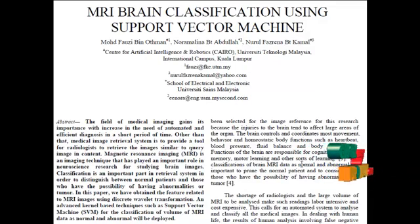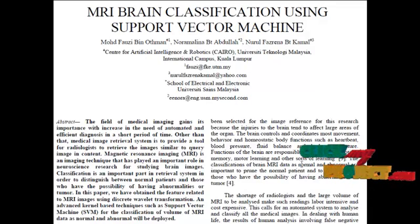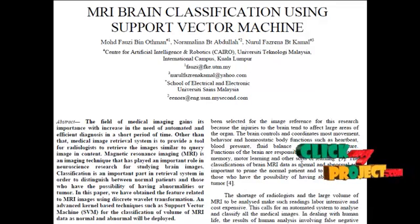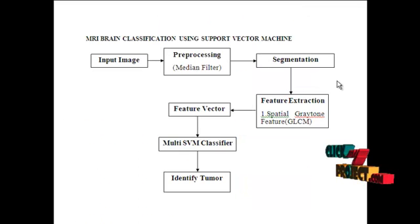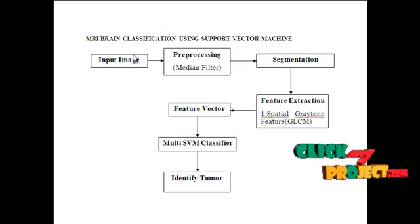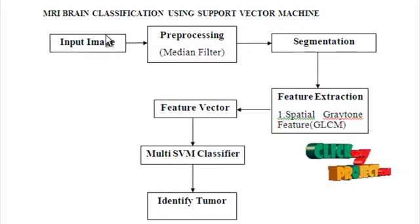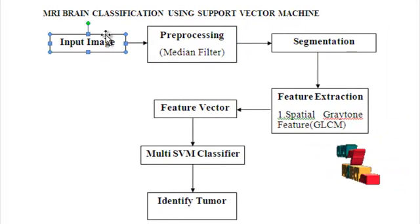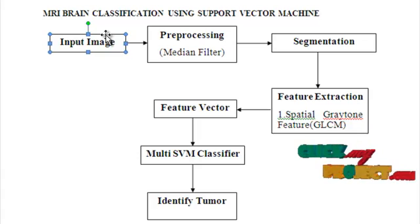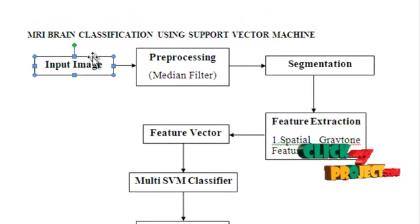At the end, we are going to identify the performance of our implementation system. Now, let us see the explanation of this data flow diagram. The first block is selection of input image by the user. The user has to select any one image from the four different categories.